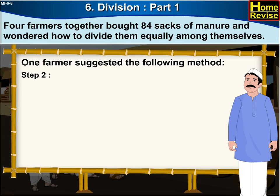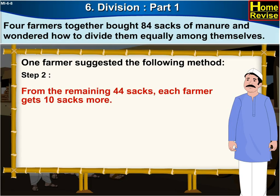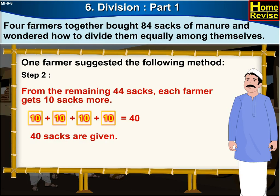Step 2. From the remaining 44 sacks, each farmer gets 10 more sacks. 10 plus 10 plus 10 plus 10 is equal to 40, so 40 sacks are given. 44 minus 40 is equal to 4, so four sacks remain.